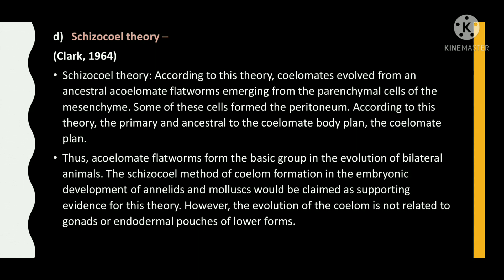The schizocoel theory states that coelomates evolved from an ancestral acoelomate flatworm, emerging from the parenchymal cells of the mesenchyme; some of these cells formed the peritoneum. According to this theory, acoelomate flatworms are primary and ancestral to the coelomate body plan. The schizocoely method of coelom formation in the embryonic development of annelids and molluscs is claimed as supporting evidence. However, the evolution of the coelom is not related to gonads or endodermal pouches of lower forms.